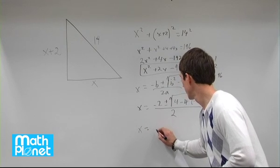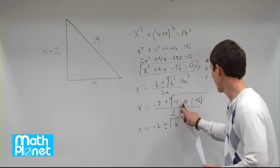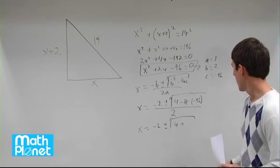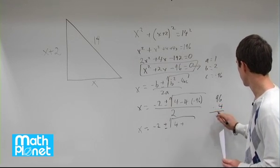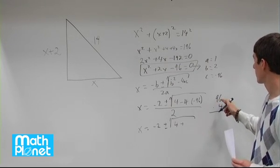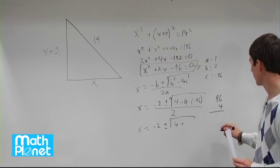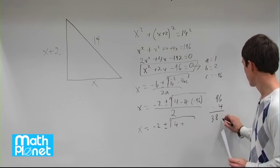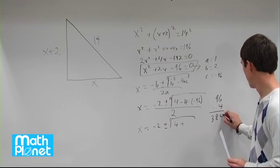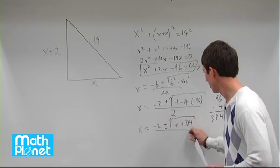x equals negative 2, plus or minus the square root of 4, minus and minus, that gives us a plus. And then we have to have 96 times 4, which gives us about 400 minus 4 times 4 is 16. So 400 minus 16, which is 384. So we have 384 here, all over 2.